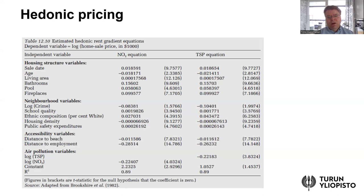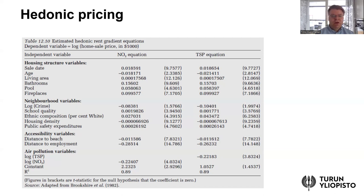There might be issues like multicollinearity that could affect these estimates, and neither variable appears necessarily statistically significant. But the main point is that we can use indirect information such as housing prices and the impact of environmental quality on those prices to estimate how much people are willing to pay for better local environmental quality. It is also possible to apply hedonic pricing in other contexts beyond housing markets — for example, a hedonic equation for cars, including emissions as an explanatory variable alongside other car attributes, to see how much people value low- or zero-emission vehicles.